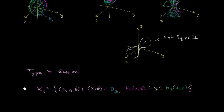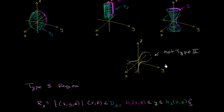So let's think about whether some of the regions we already saw — which were type 1 and type 2 — are also type 3, and then think about what would not be a type 3 region. Let's start with the sphere.